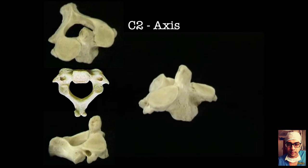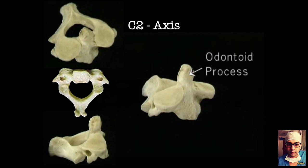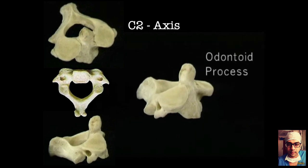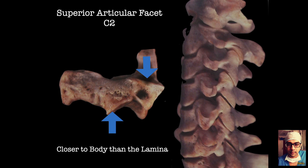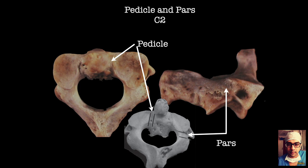The C2, or axis vertebra, is also unique. The odontoid process forms the pivot of the C1-C2 joint. For posterior instrumentation, the superior articular facet is not exactly over the inferior articular facet as in the rest of the cervical spine — there is an offset, creating an elongated area of bone called the pars of C2, where many screws are inserted. People use pedicle and pars of C2 interchangeably: the pedicle is a small area of C2, while the pars is the bone between the superior and inferior facets — the pars interarticularis.